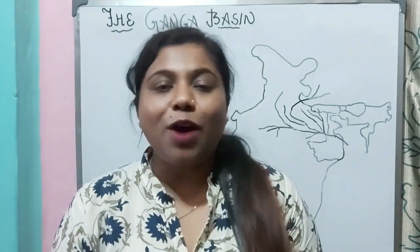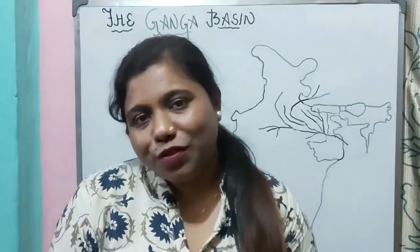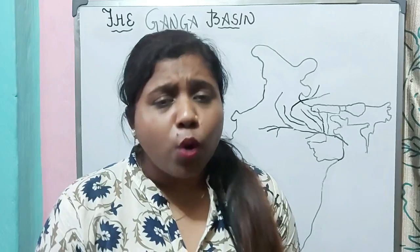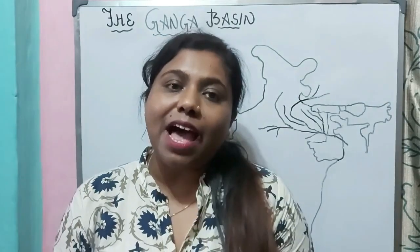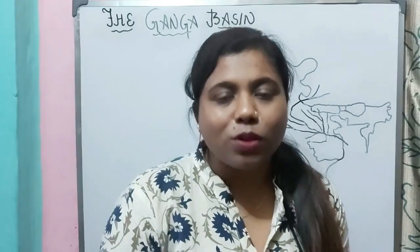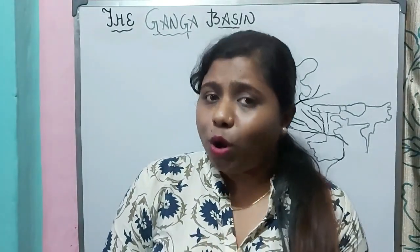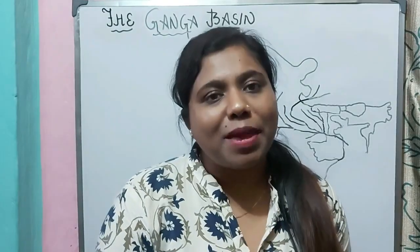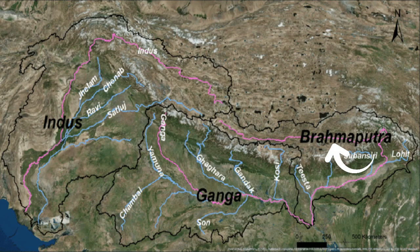Hello students, Class 4! Welcome back to geography class. In the last video we discussed about the Satluj basin — its location, the states that lie in it, the Bhakra Nangal dam, and the Indira Gandhi canal. As we know, the northern plains are divided into three basins: the Satluj basin in the west, the Ganga basin in the middle, and the Brahmaputra basin in the east. Today we will discuss the Ganga basin.